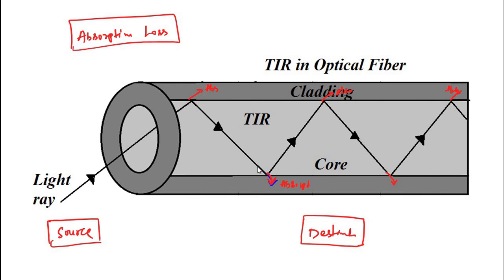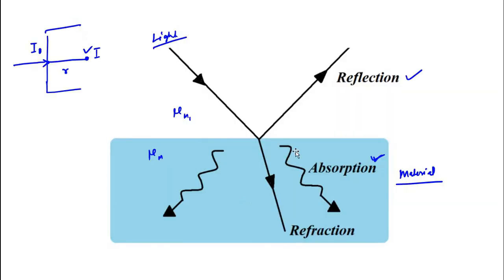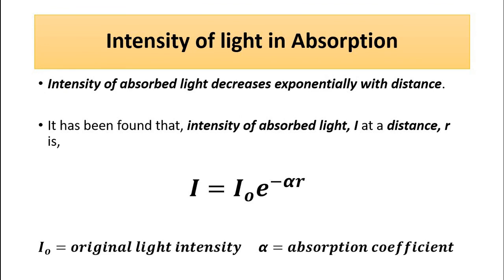With each successive total internal reflection, as each light ray strikes the core-cladding interface, some portion of the light travels into the cladding and is lost — it undergoes loss of intensity. There is a reduction in signal intensity at the receiver side. This is why we are discussing the phenomenon of absorption. So here we have discussed the absorption optical phenomenon.